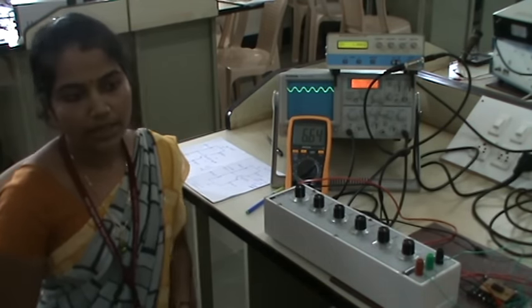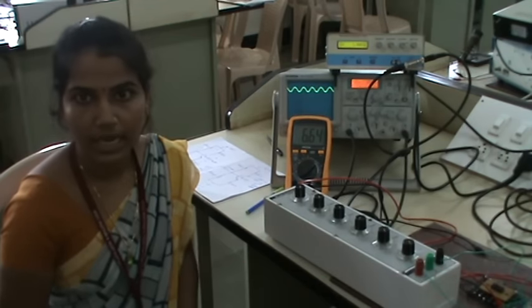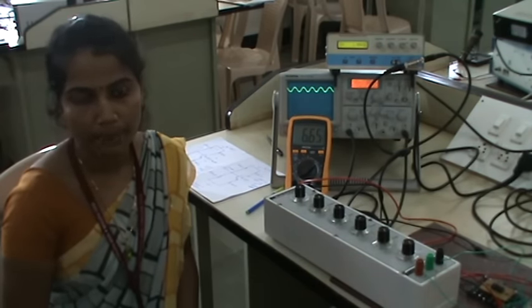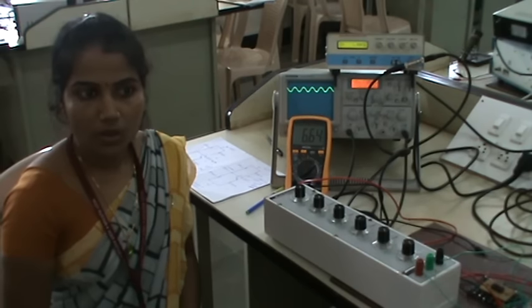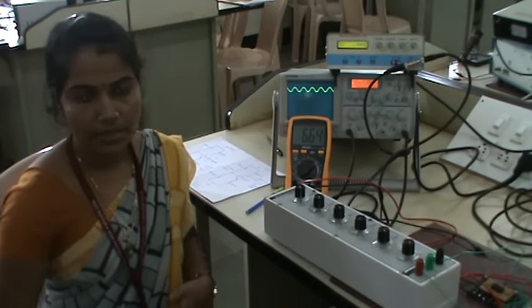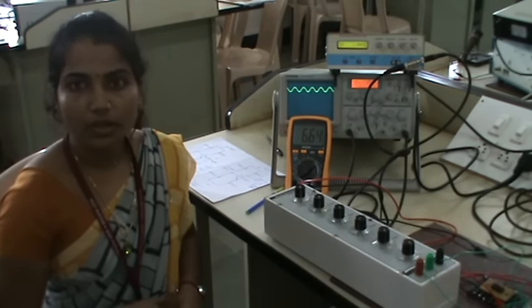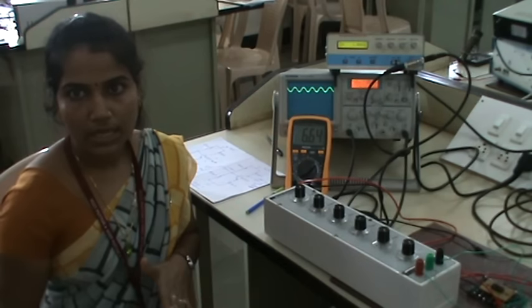Power amplifiers are categorized as Class A, Class B, Class AB, Class C, and Class D amplifiers. These are all divided and categorized based on the input power as well as the output power.